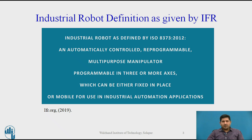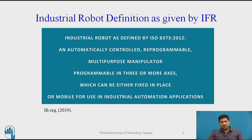The platform need not be fixed — you may have a stationary platform or it may be on a mobile platform. This definition has actually been extended in recent years because you are getting configurations which are now available on a mobile platform, especially in a work cell. And to sum it up, they make it very clear that it's meant for industrial automation applications. This is how the definition of industrial robot goes as per ISO and also by the International Federation of Robotics.